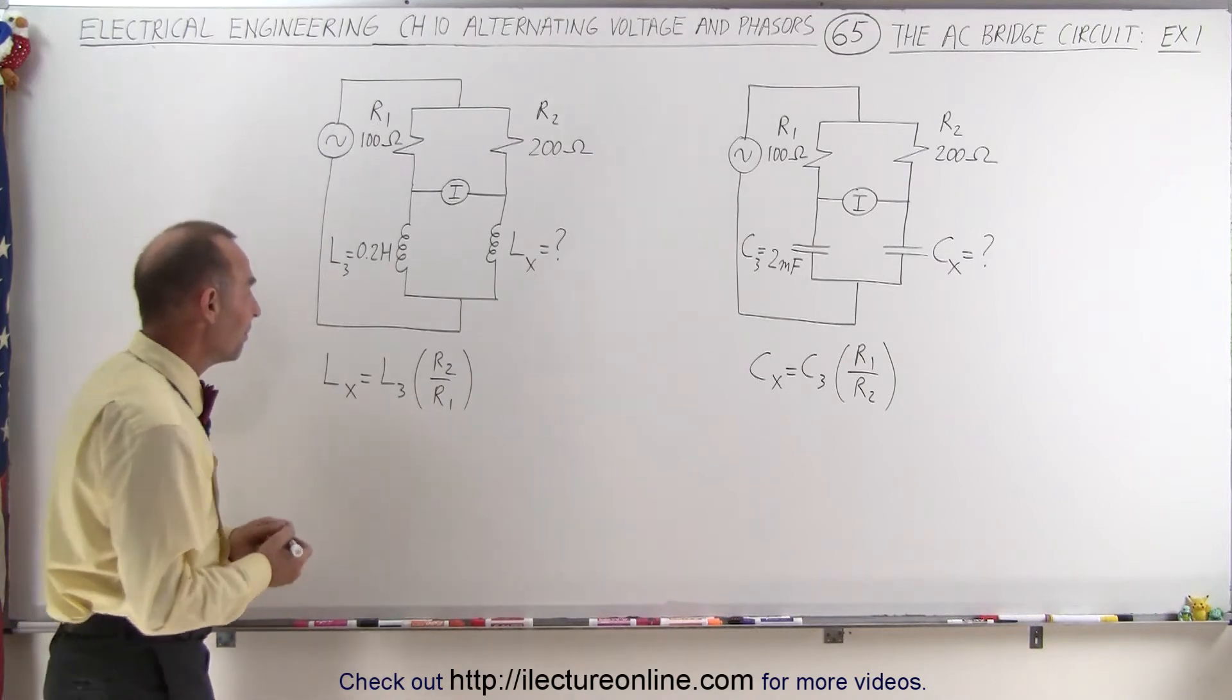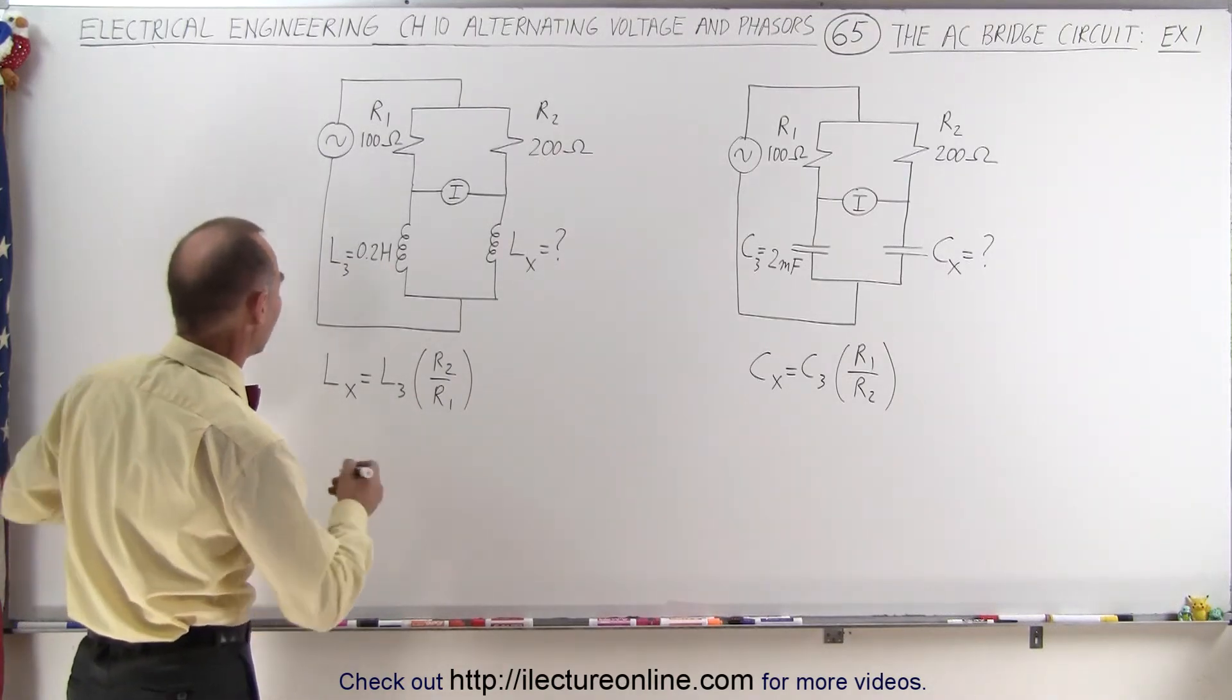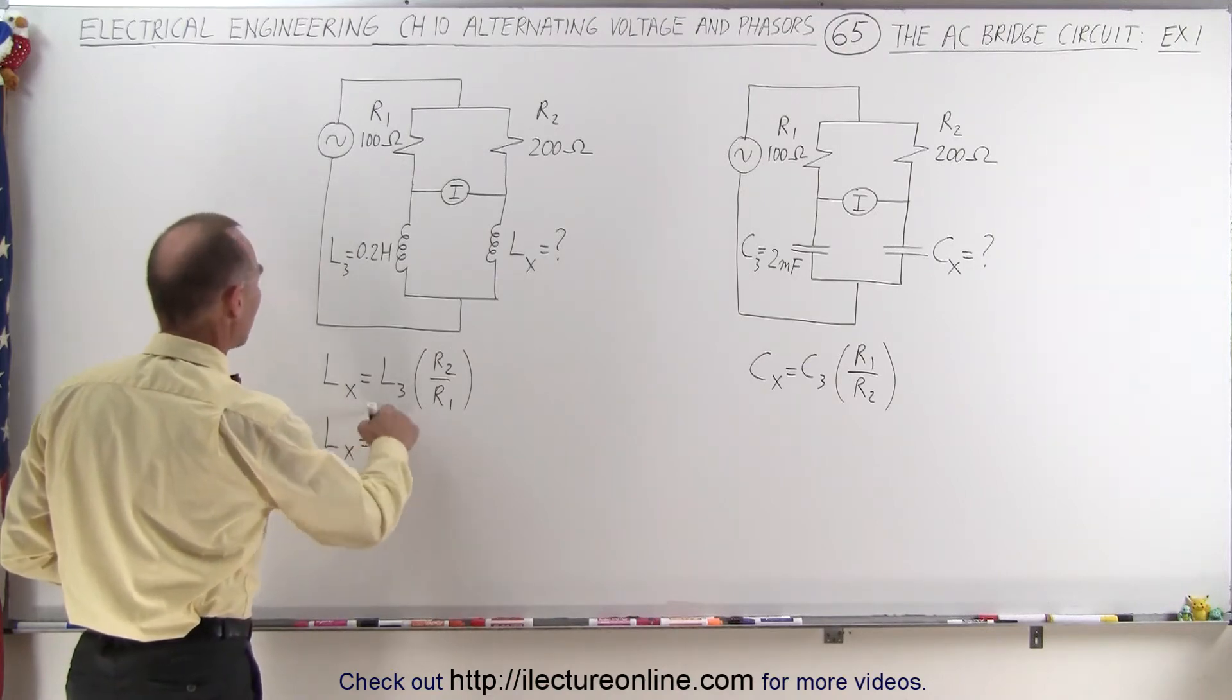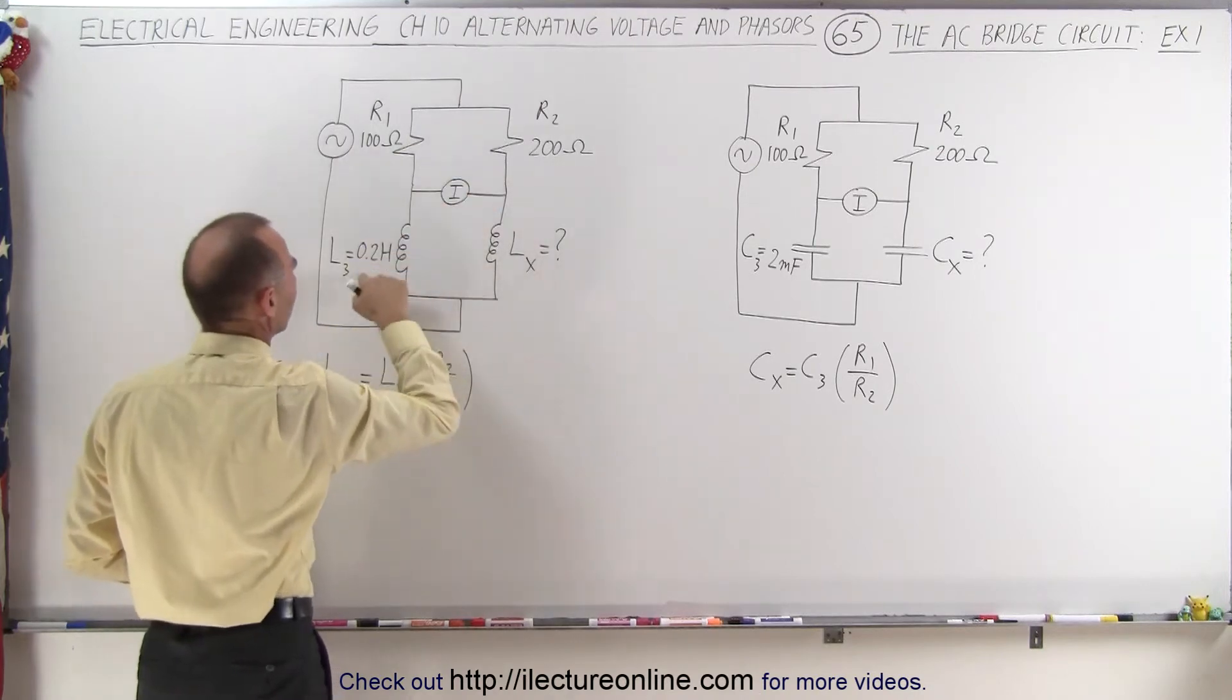But notice it's actually a very simple method to find the unknown inductance. So L sub X will be equal to the known inductor, we'll call that L3. We'll call that R1, R2,